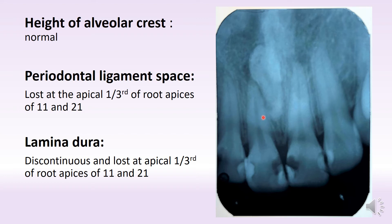But the two teeth which are very clearly visible are 1-1 and 2-1. If you look at the apices of 1-1 and 2-1, you will see that you can follow the line of the PDL all the way up to the apex — up to the apical one-third — but somewhere at the apical one-third it gets blurry and you can no longer see the PDL and lamina dura.